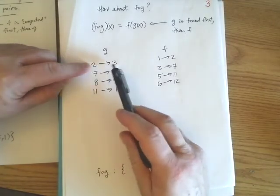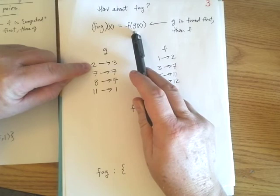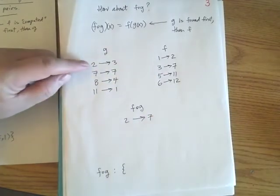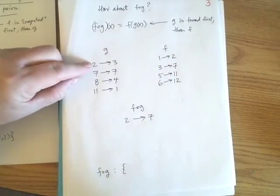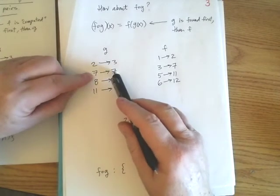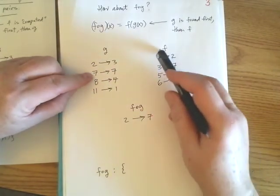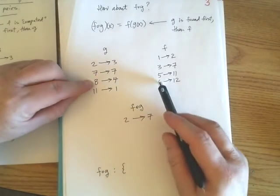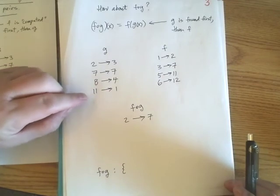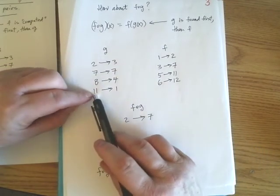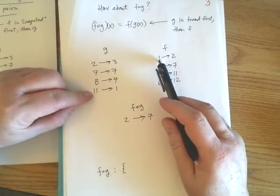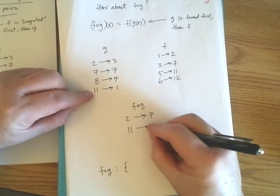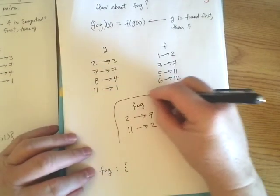2 drops into G. So I'm computing G of 2. That ends up being 3. And then I go F of 3 is 7. So 2 points at 7. So like we were doing at the end of the last problem, 2 points at 3, 3 points at 7. So ultimately 2 points at 7 in the composition. 7 points to 7. What does F do with 7? Nothing. 7 is not part of the domain of F. So 7 led nowhere. How about 8? 8 points to 4. What does F do with 4? Again, it can't do anything with it. So we have a pretty small function this time, the composition. 11 points to 1. Can F do anything with 1? Yeah. What does it do with 1? It turns it into 2. So following the arrows, 11 ultimately leads to 2. So here is our composition this direction.